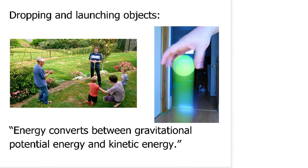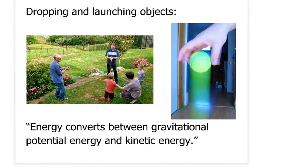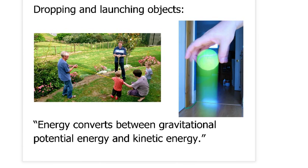Alright, so as we were just talking about there, I got a little bit ahead of myself. When you drop things or launch things, energy is converted between gravitational potential energy and kinetic energy. So if you drop something, the potential energy turns into kinetic energy. If you launch something into the air, then the kinetic energy, the energy of motion of that object gets converted into potential energy.